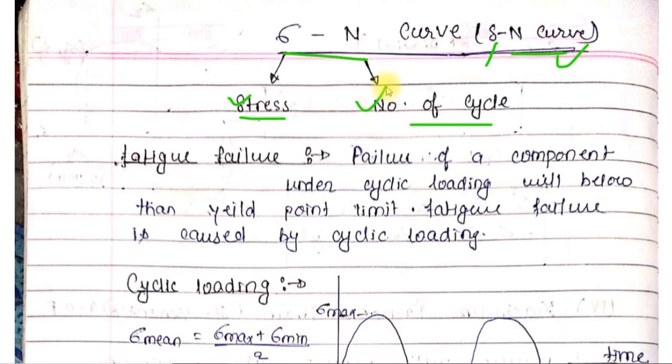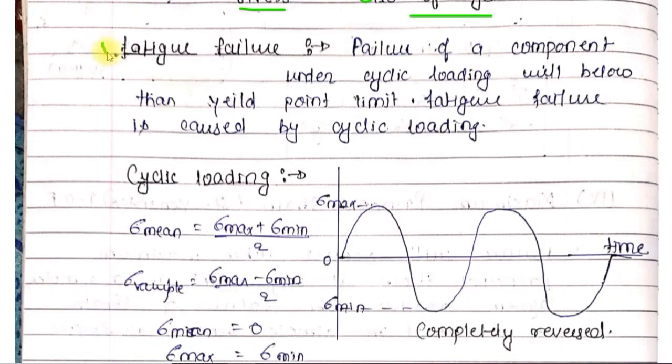But before explaining sigma-N curve, let me tell you what is fatigue failure. Fatigue failure is the failure of a component under cyclic loading, below the yield point. This means that when cyclic loading is applied, cyclic loading means fluctuating loads.